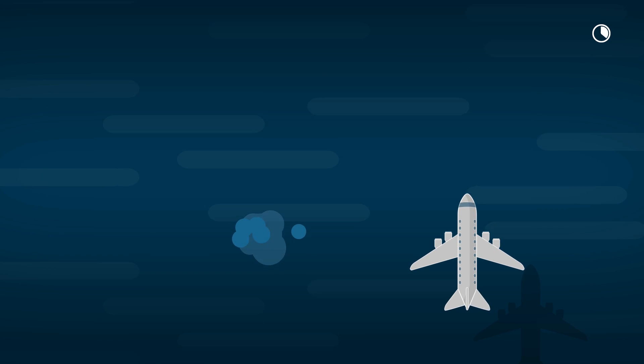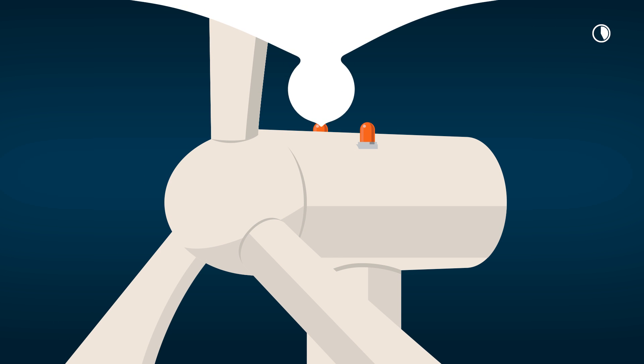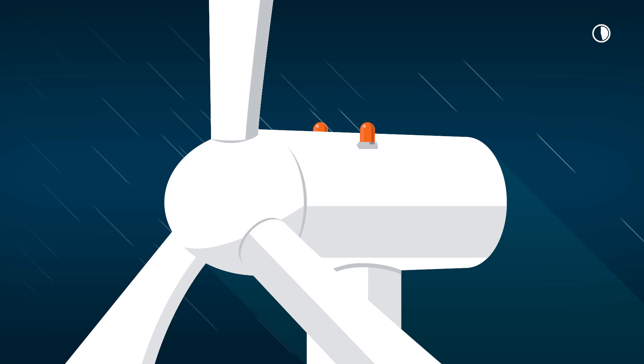This law also requires wind farms to use obstacle lighting for maximum effect. On top of this, the white paint is a layer of protection. It protects the wind turbine from weather conditions to prevent rust.